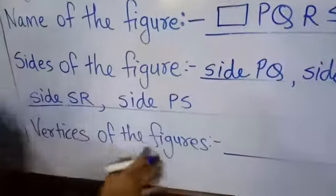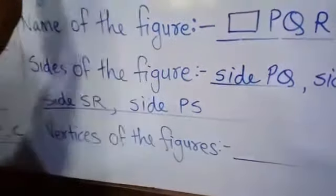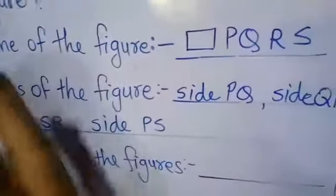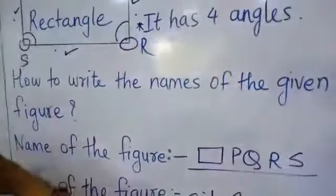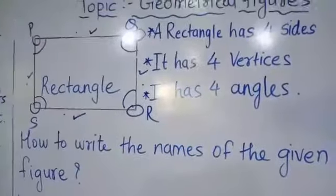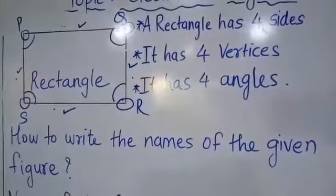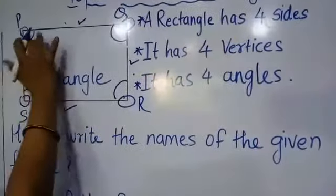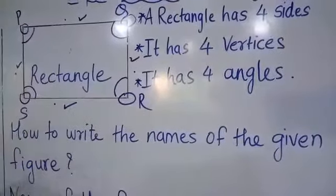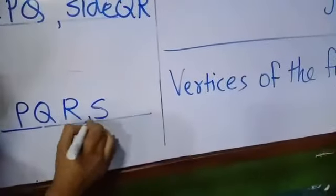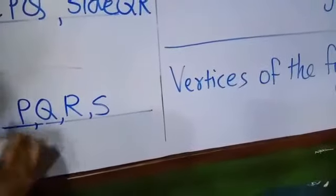Now the vertices of the figure — as I mentioned, there are four vertices: one, two, three, and four. We write them the same way as the triangle: P, Q, R, and S are the vertices.